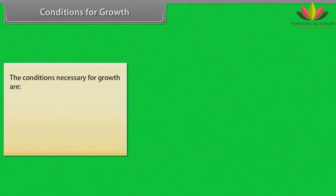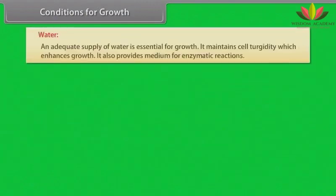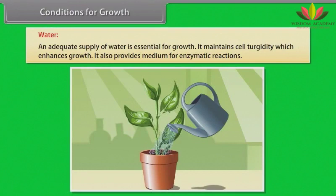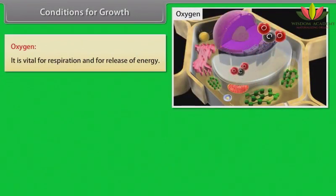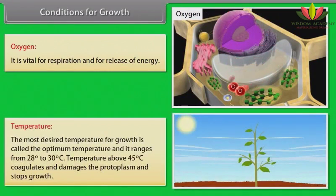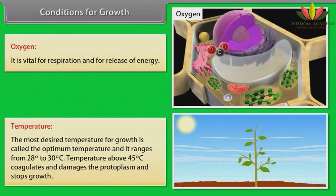The conditions necessary for growth are: nutrients — enough supply of nutrients is necessary for synthesis of protoplasm and acts as a source of energy; water — an adequate supply of water is essential for growth, it maintains cell turgidity which enhances growth, and provides medium for enzymatic reactions; oxygen — vital for respiration and for release of energy; temperature — the optimum temperature for growth ranges from 28 to 30 degrees Celsius. Temperature above 45 degrees Celsius coagulates and damages the protoplasm and stops growth.